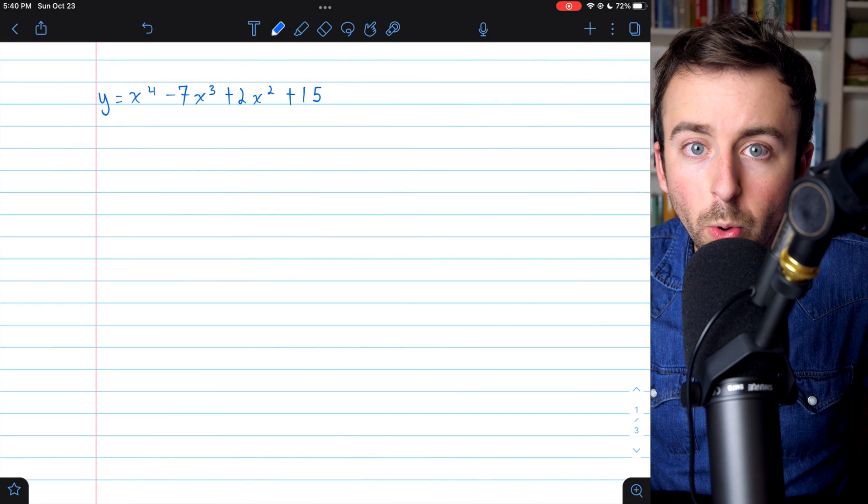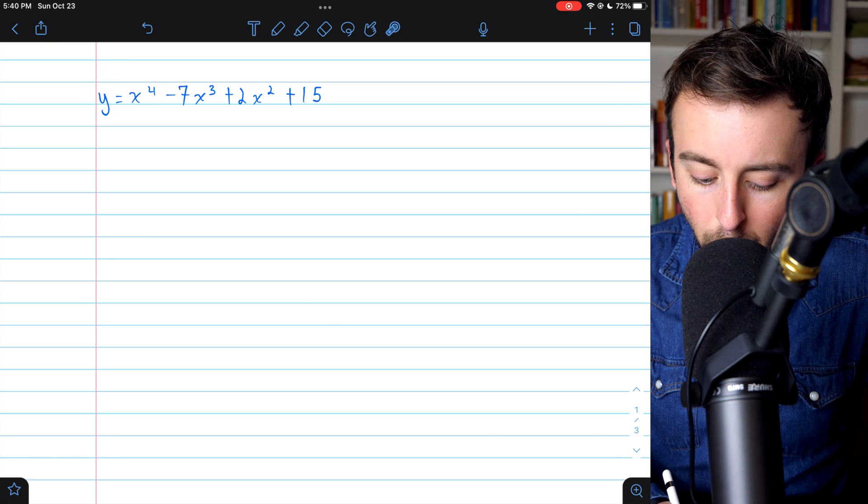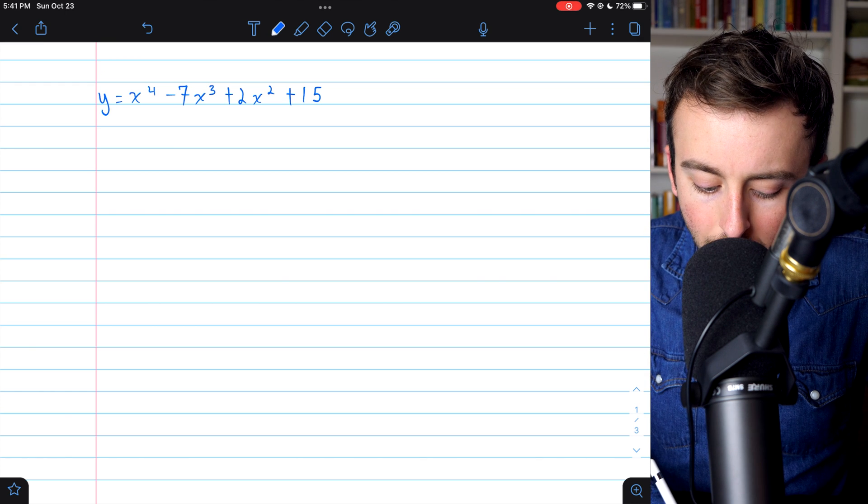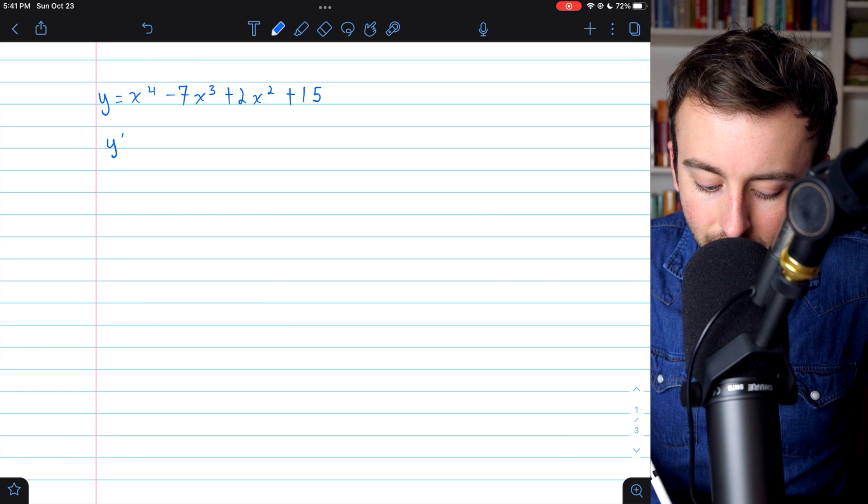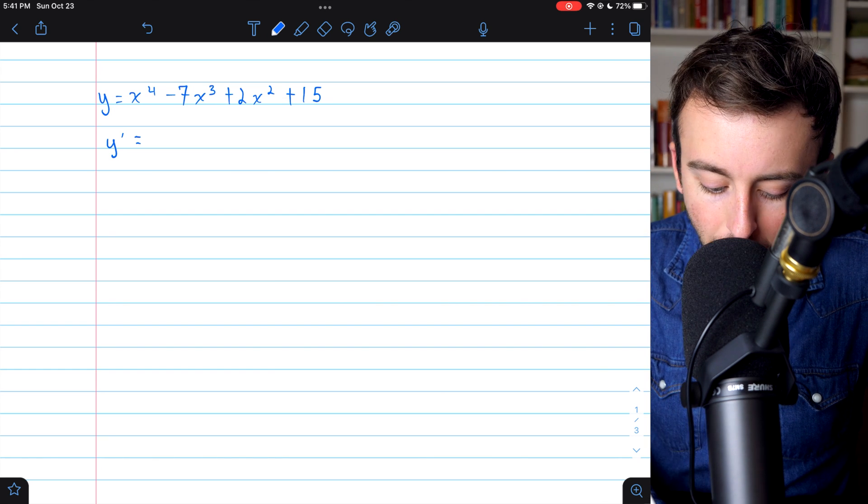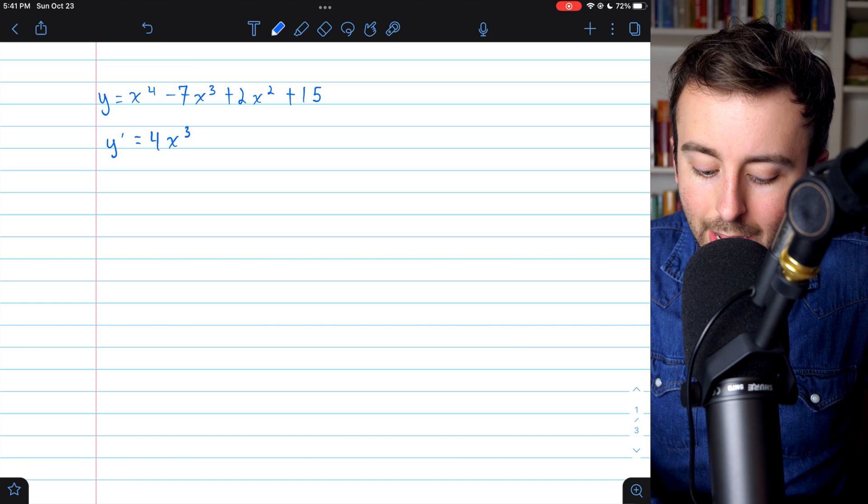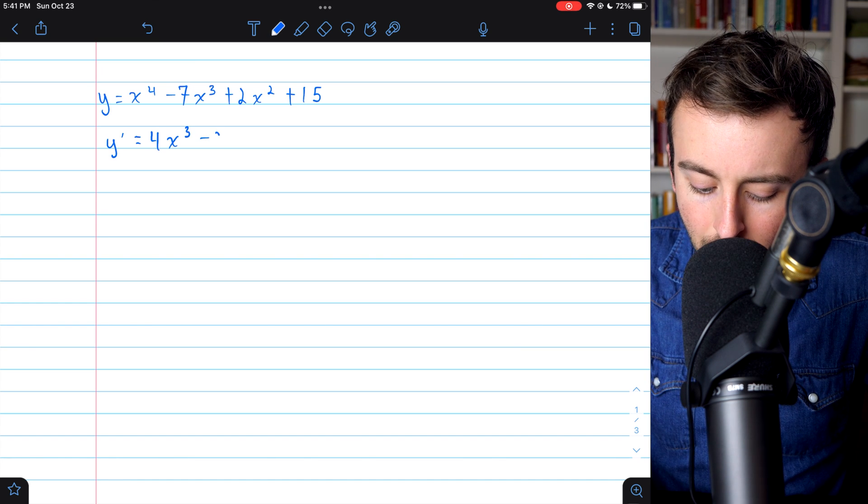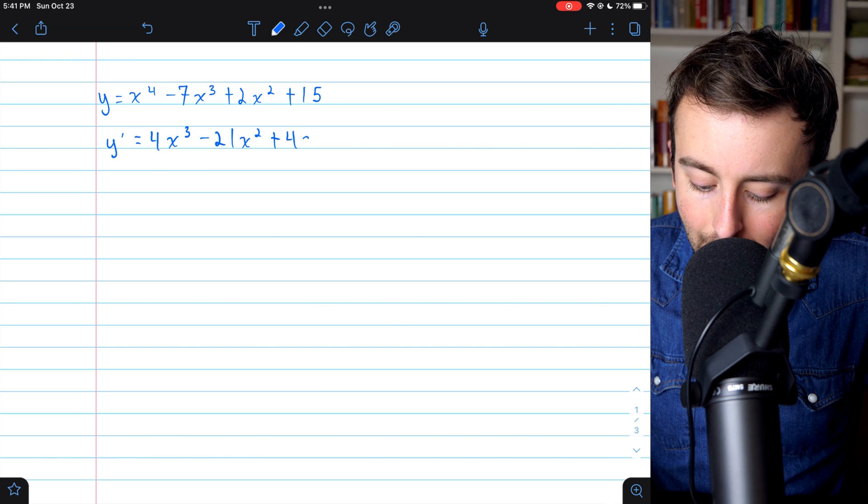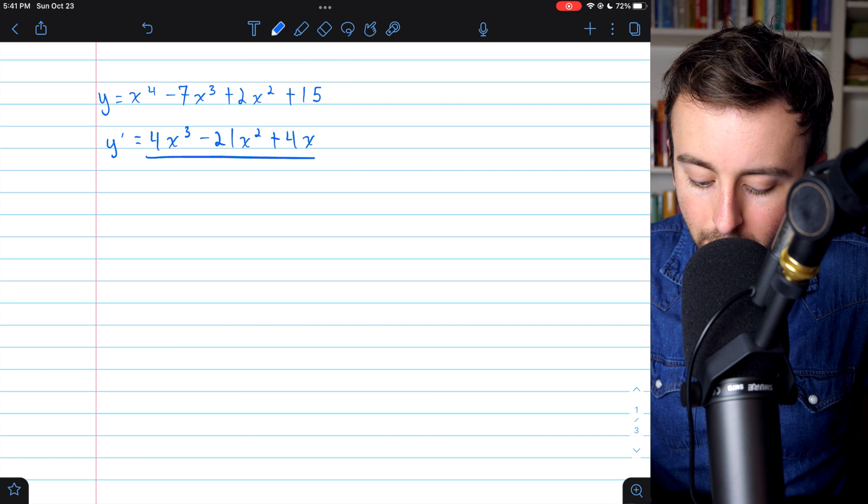All right, let's go over one more example together. Here is our curve. y equals x to the fourth minus 7x cubed plus 2x squared plus 15. We want to find the horizontal tangents, so we need to start by taking the derivative. Then we'll set that equal to 0. Taking the derivative using the power rule over and over again gives us 4x cubed minus 21x squared plus 4x. And then the derivative of a constant is just 0. So we're done here.